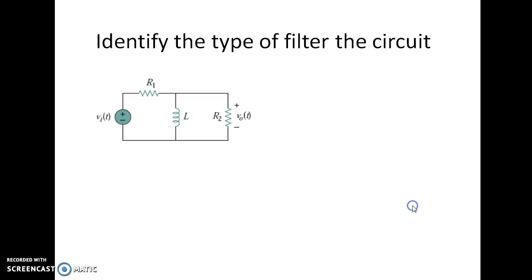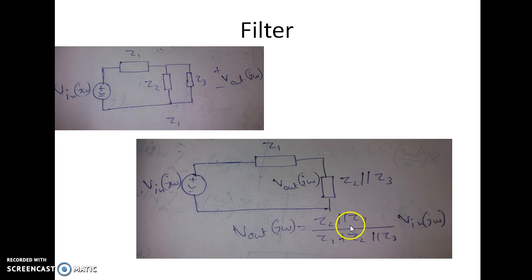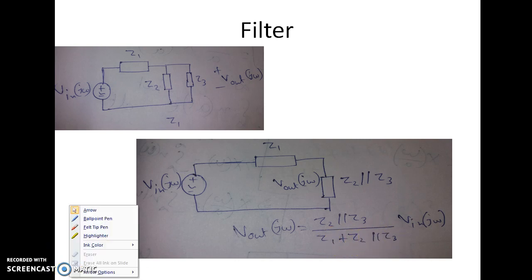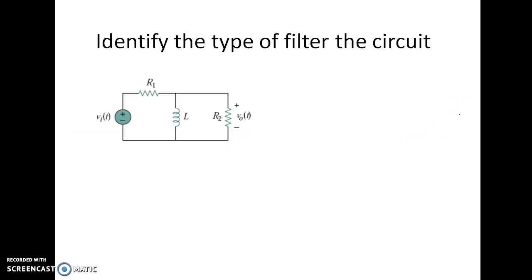So the transfer function V output of jω divided by V input of jω equals Z2 parallel Z3 divided by Z1 plus Z2 parallel Z3. This is the transfer function of this circuit. Now let us apply this concept in one numerical.